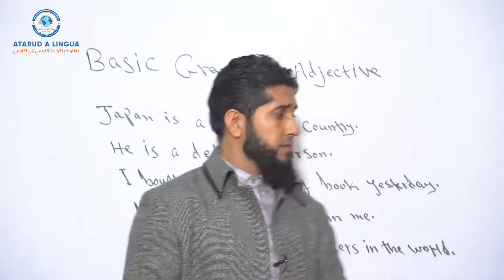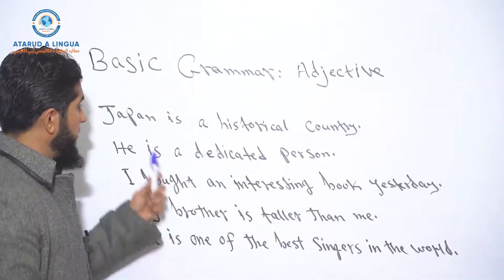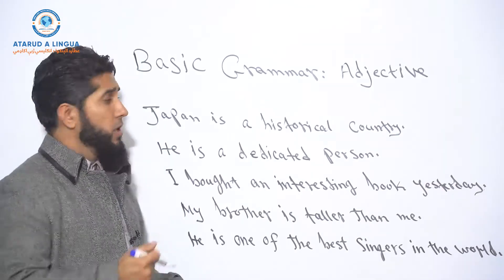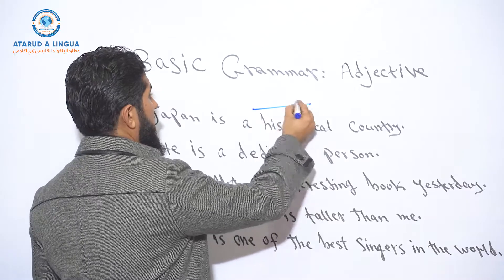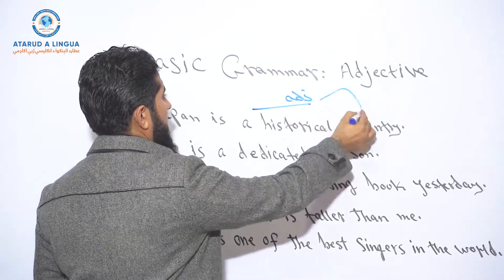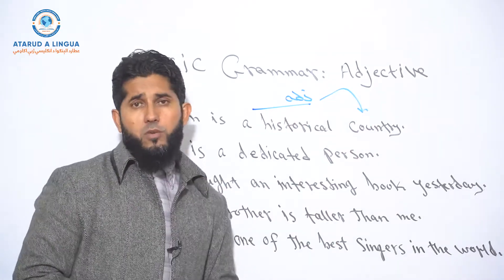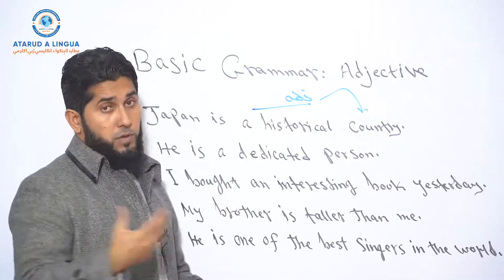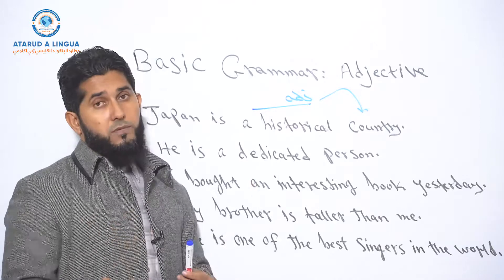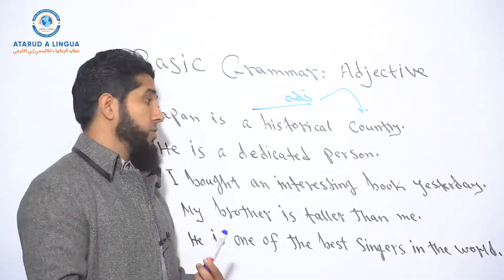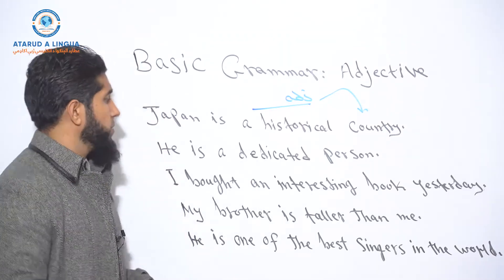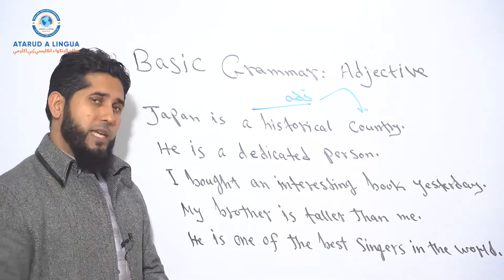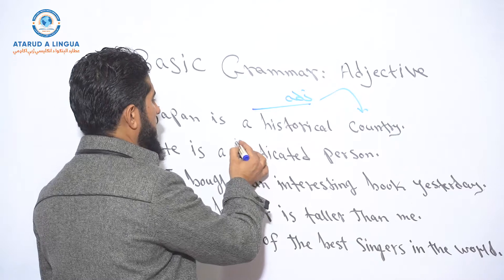Look at these examples. In the first example: 'Japan is a historical country.' The word 'historical' is an adjective because it describes the noun 'country' or the name 'Japan,' and it answers the question 'what kind of country is Japan?' — it is a historical country.